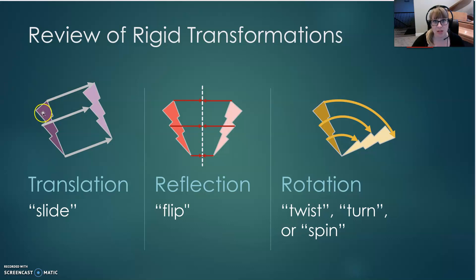We start with a translation, also known as a slide. In a translation, we take an object and simply slide it to its new position. Next, we have a reflection. A reflection is known as a flip, where an object is flipped over a specific line. That line is known as the line of reflection.